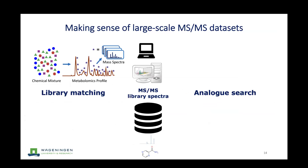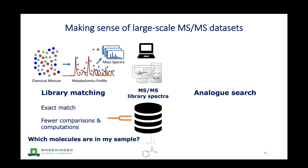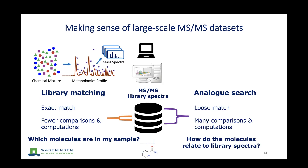Once we have clean data, we need to make sense of large-scale datasets. The first thing to do is library matching — you go to public libraries and try to match what you have to what is there. Exact library matching uses a strict search window with fewer comparisons and answers the question: which molecules are in my sample? Analog search uses a looser match with many more comparisons, answering: how do the molecules in my sample relate to library spectra?